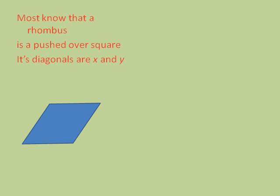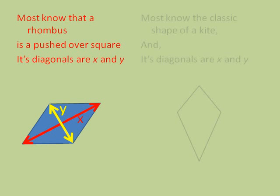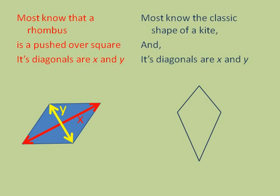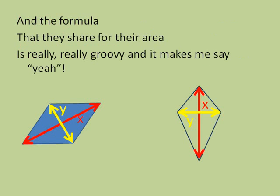Most know that a rhombus is a pushed over square with diagonals X and Y. And most know the classic shape of a kite and its diagonals X and Y. The formula that they share for their area is really groovy and it makes me say yeah.